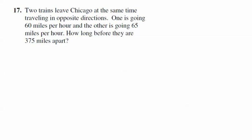Alright, problem number 17. Again, we have a very typical Algebra 1 type of a word problem. Two trains leave Chicago at the same time, traveling in opposite directions.